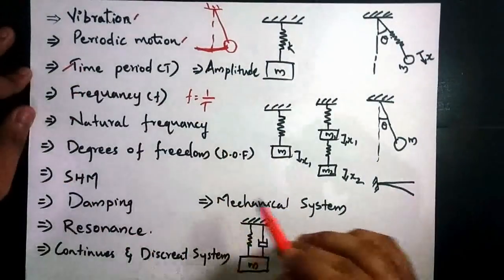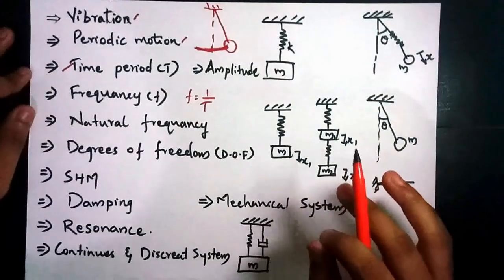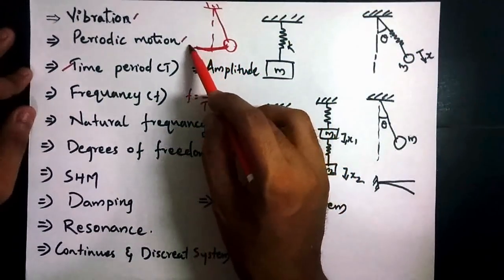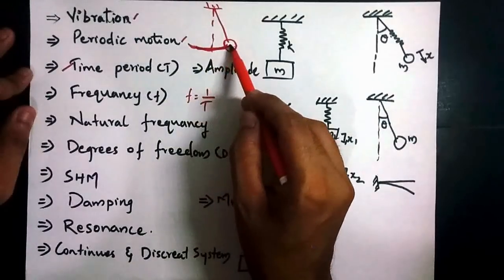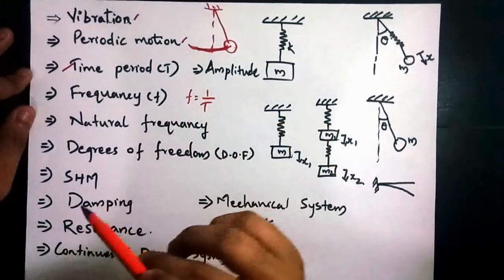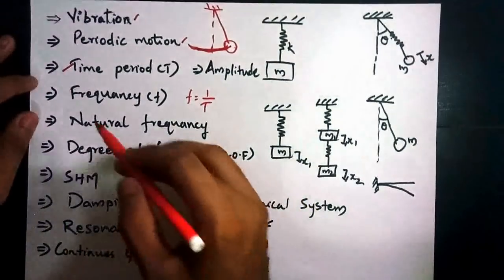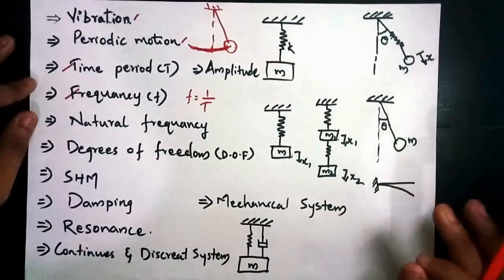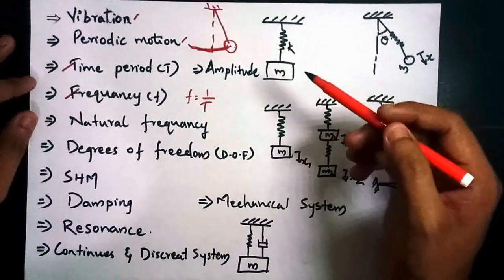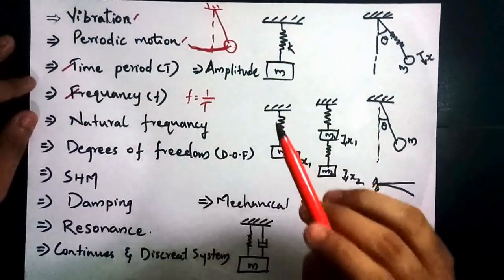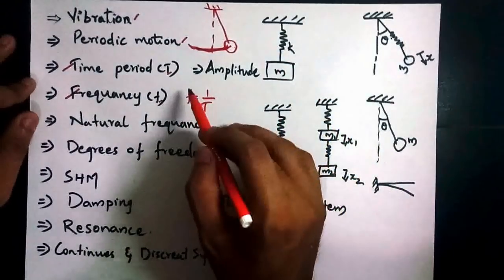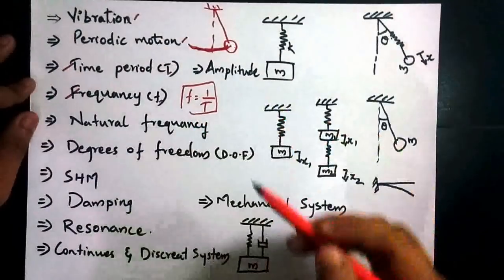The next term is time period. Time period is the time required to complete one cycle, represented by capital T. The next term is frequency. Frequency is the number of cycles per unit time. The equation relating frequency and time period is: f is equal to one divided by T.